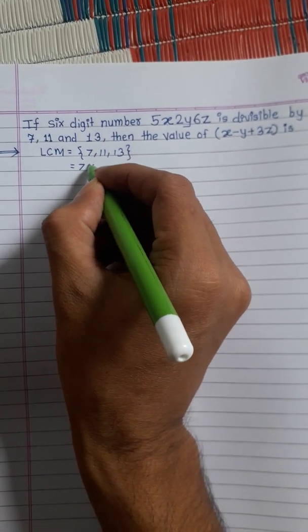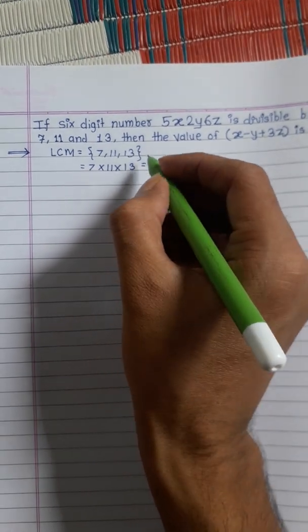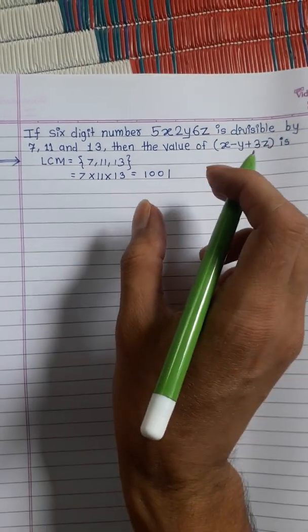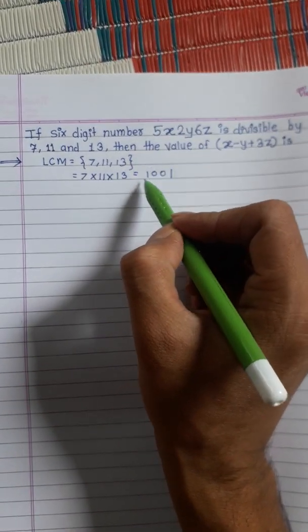We will multiply them. Therefore, the LCM will be 1001. Now this number should be divisible by 1001.